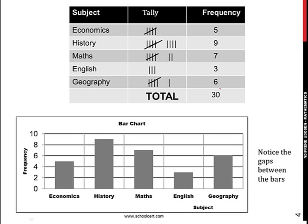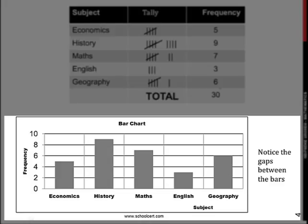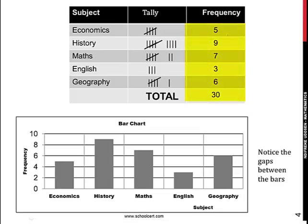The next question had asked us to construct the bar chart and the pie chart. We start with the bar chart. You plot a graph of frequency here, this column here, against the subject. We have different subjects: economics, history, mathematics, English, and geography.